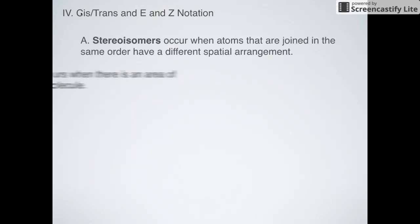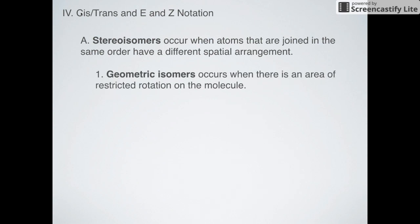The first thing that we need to do is talk about these two definitions: stereoisomers and geometric isomers. A stereoisomer occurs when atoms are joined together in the same order but have a different spatial arrangement. Specifically, a geometric isomer occurs when there is an area that is restricted and doesn't allow the molecule to rotate around. We're used to seeing that in the case of double bonds, because double bonds restrict rotation.